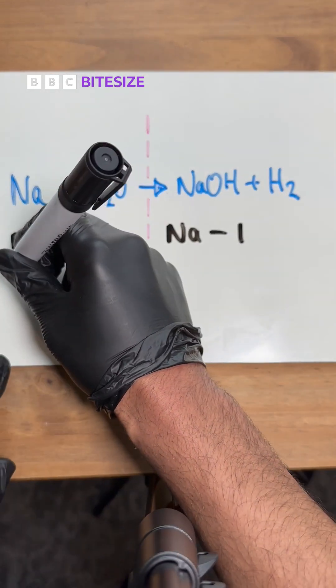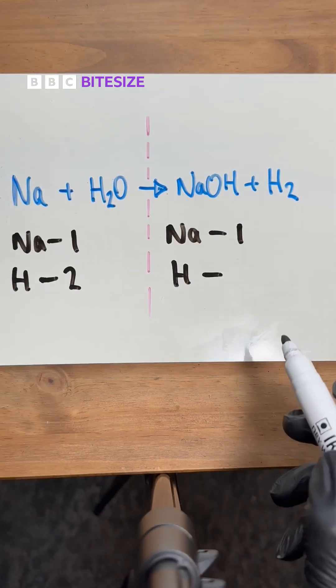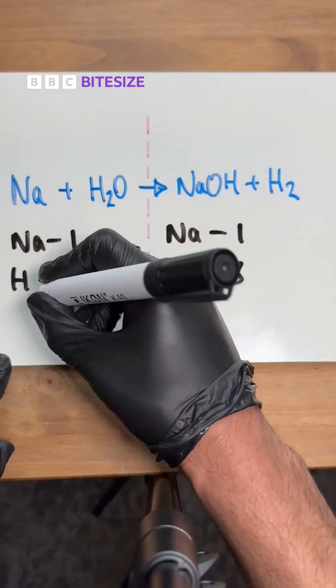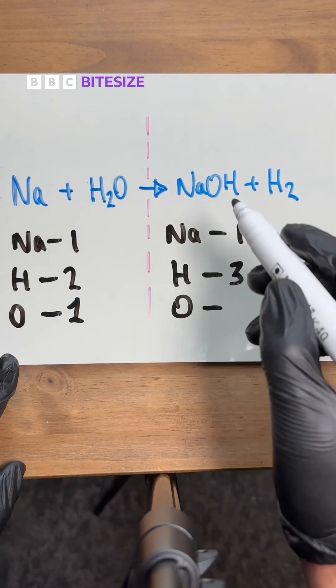Now with the hydrogen we have two hydrogens in the H2O on the left and on the right we have three hydrogens there. What about the oxygen? We've only got one on the left and on the right we've also only got one oxygen.